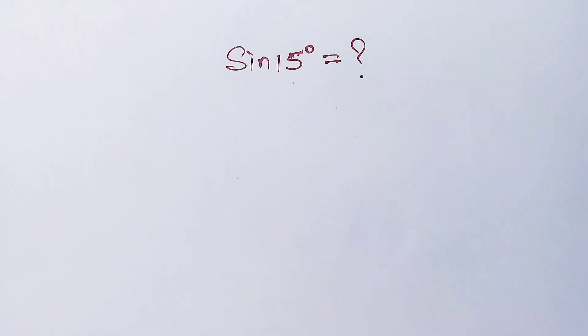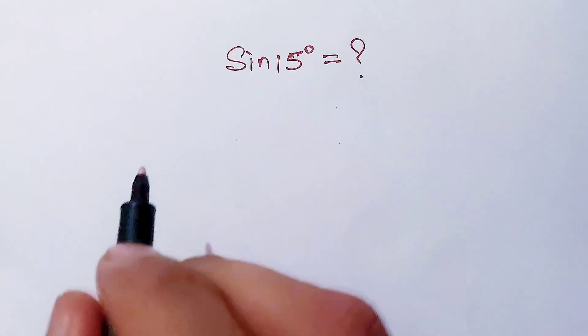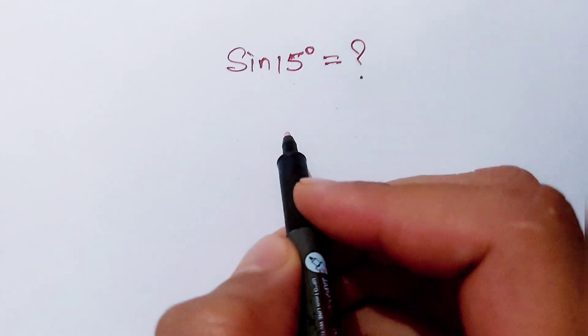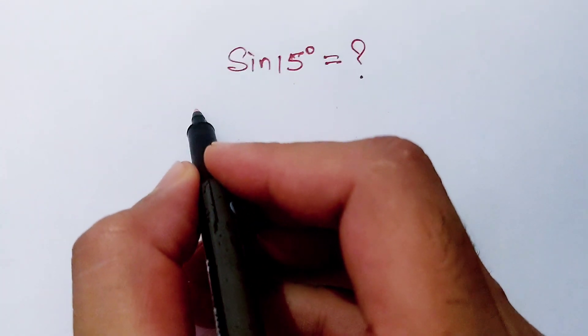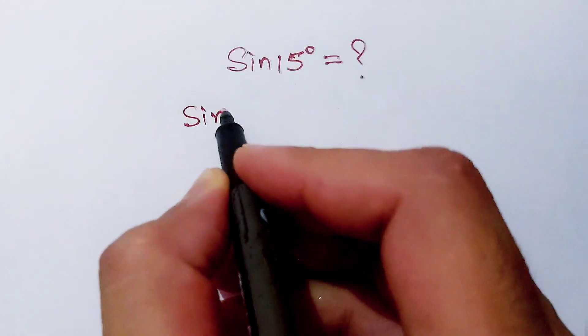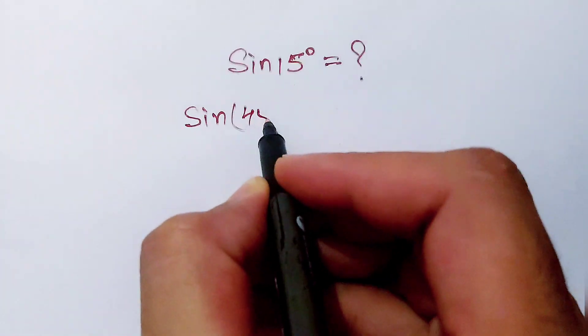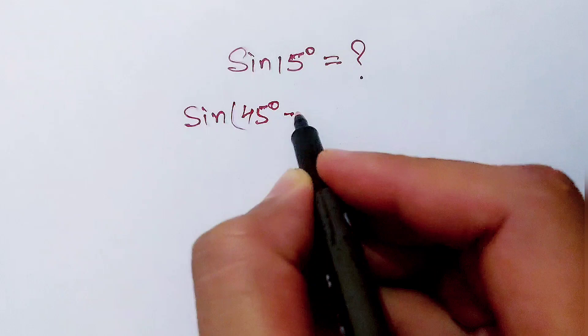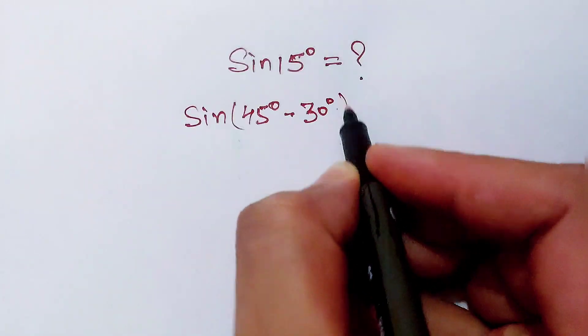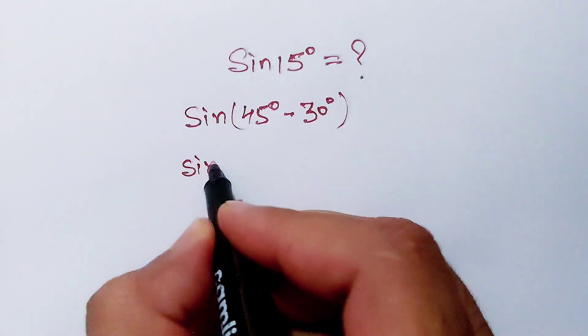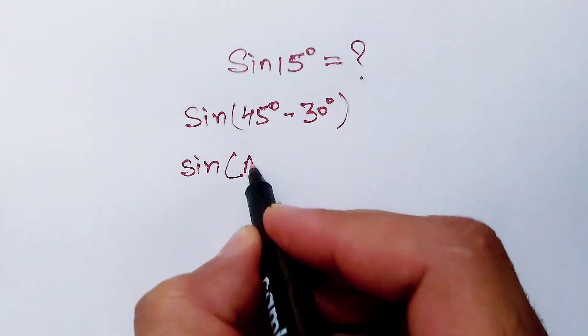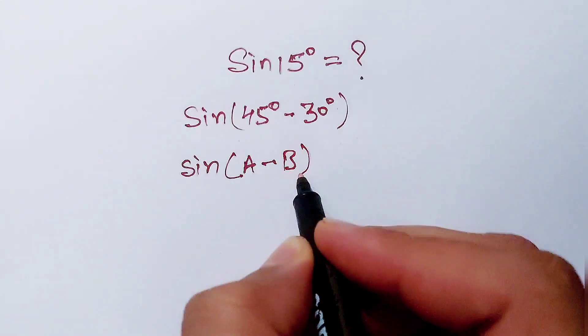Hello, the question is we have to find the value of sine 15 degrees. Let's find out. First of all, I can write sine 15 degrees as 45 degrees minus 30 degrees.